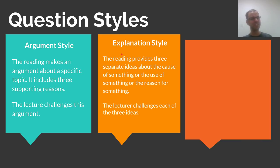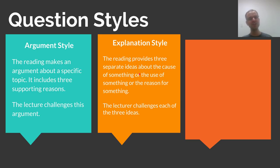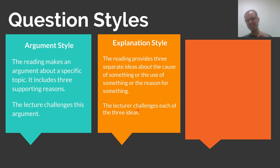Next up is the explanation style question. Here, you begin with a reading that provides three separate ideas about the cause of something, or the use of something, or the reason for something. Then you listen to a lecture which challenges each of these three ideas. For example, the reading might provide three ideas about why the city of Angkor Wat collapsed, but then the lecturer would say that each of these three ideas specifically is incorrect.